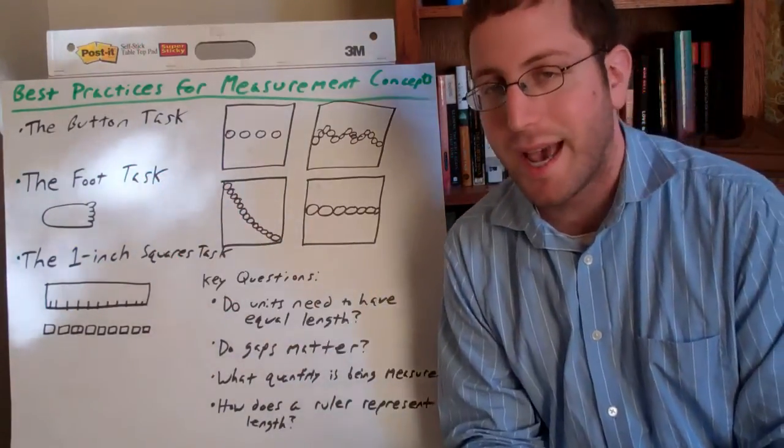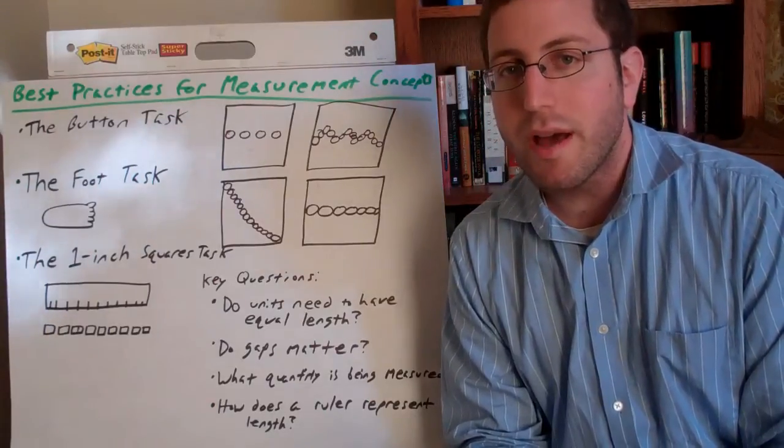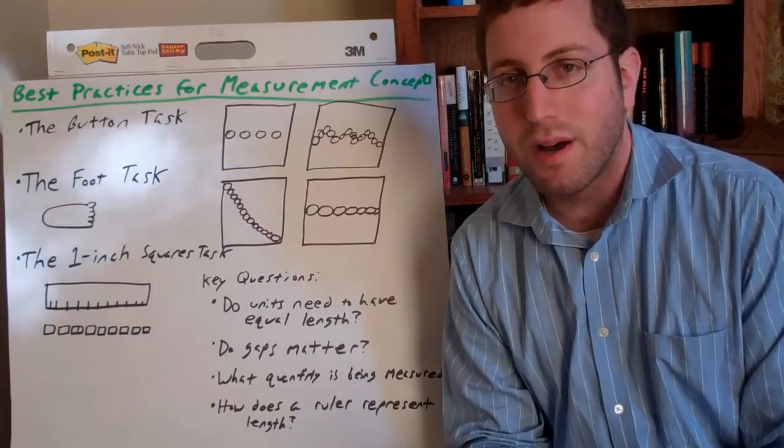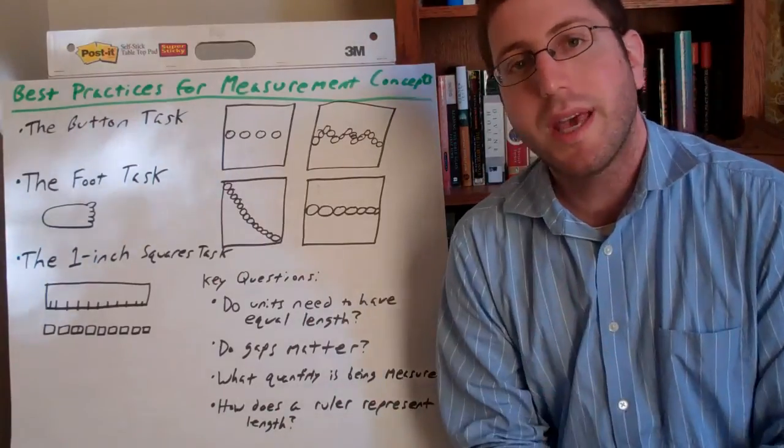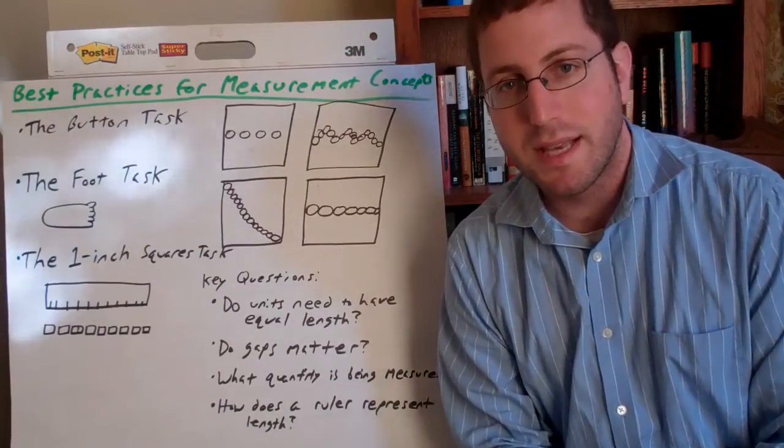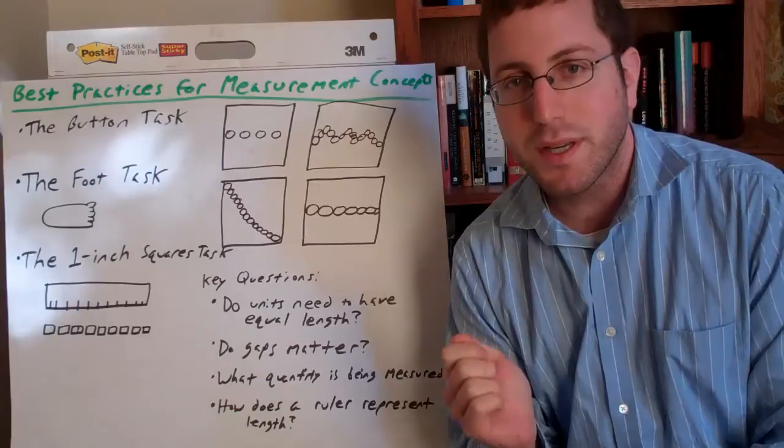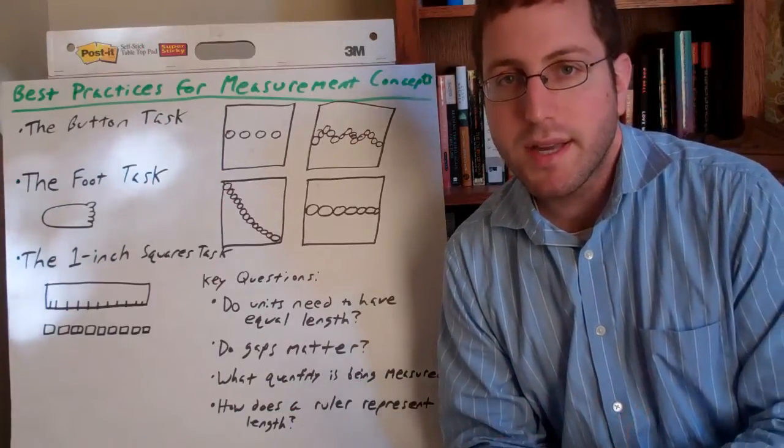The second task is called the foot task. And this is when you have students make a cutout of a tracing of their own foot. And that's the only tool they have to measure with for the purpose of this lesson. So, with their foot cut out,